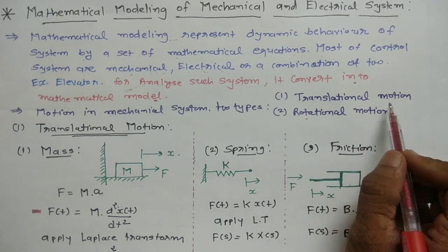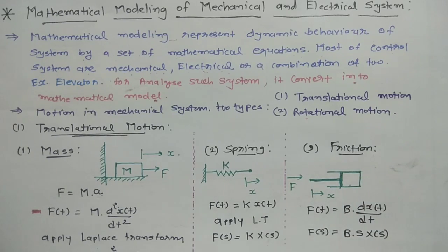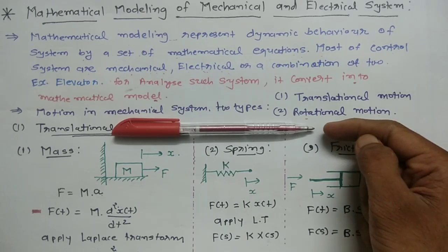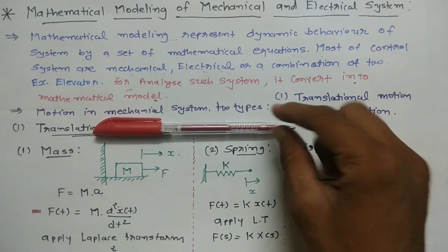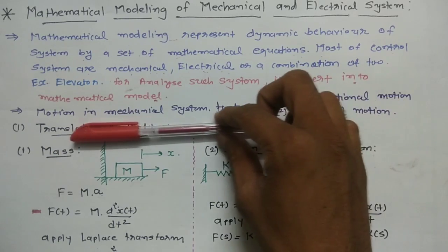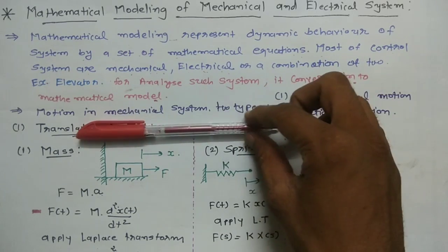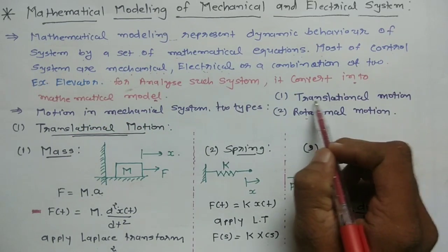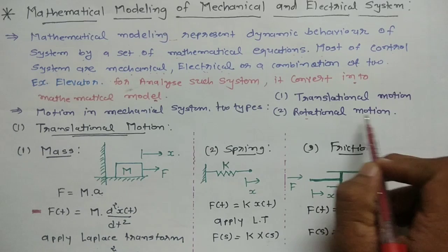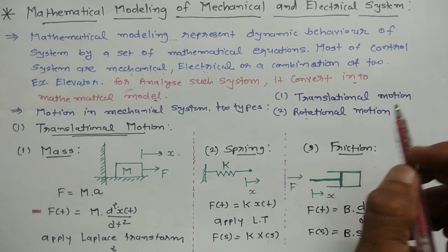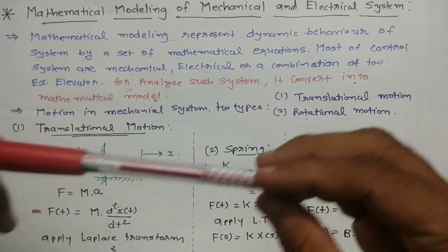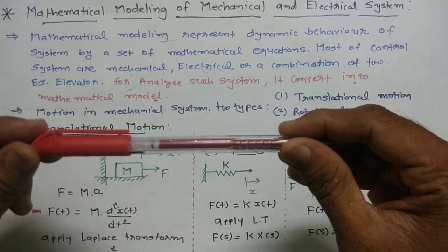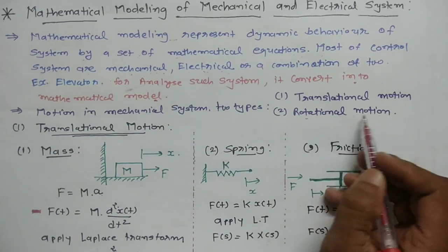First, what is translational motion? If you have an object and it moves linearly only, this type of motion is known as translational motion. And what is rotational motion? In rotational motion, if you have an object and it rotates, then this type of motion is rotational motion.